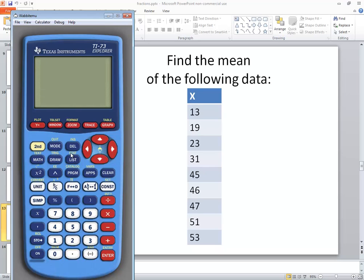Now we will go into our stat menu. You see that's above the list. So I'm going to do my second list, and then I'm going to right arrow over to calc, and we'll do enter on one variable stats, and then we'll do enter again.